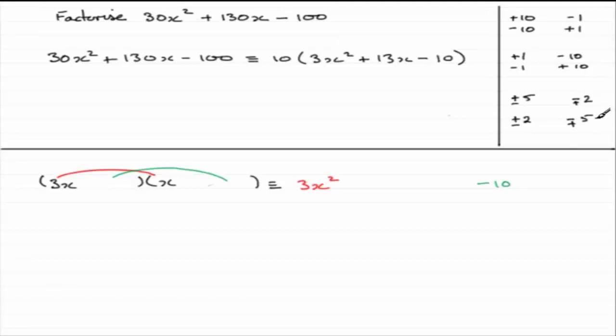So which of these combinations is it going to be? Well, let's just dive in and choose the top one. 10 and minus 1. Let's put plus 10 here and minus 1 here and see what happens. Don't be afraid of just taking a guess. Well, we know we've got the 3x squared. We know we've got the minus 10. It's the x terms that we're really interested in now. 3x times minus 1 is going to be minus 3x, and plus 10 times x is going to be plus 10x. And what does this give us? Well, it gives us plus 7x. Not the 13x that we wanted.